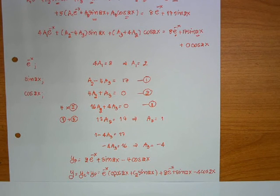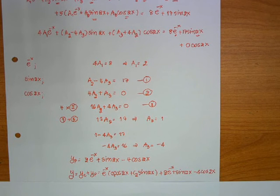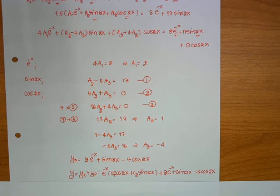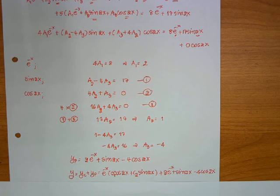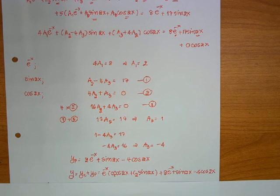So our yp equals 2 times exponential of minus x, plus sine 2x, minus 4 cosine 2x. And our general solution is y equals yc plus yp.